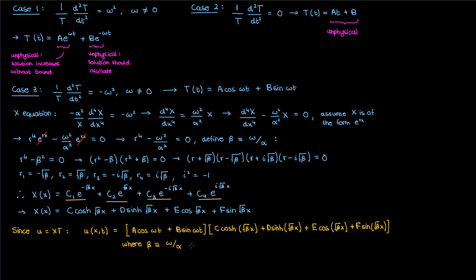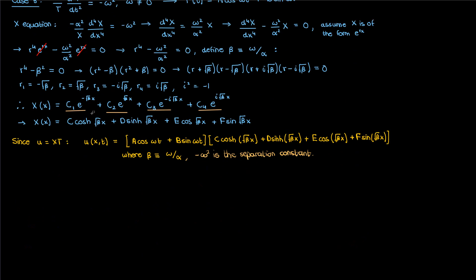Welcome back to my video series on partial differential equations. In this lesson we're going to continue solving our fourth order PDE for the vibrating beam. We've resumed directly from where we left off in the last lesson, so I encourage you to refer to that video if you need to refresh your memory. Recall that we had left off with u given by this expression, where the constant beta is given by the ratio of omega to alpha, and omega is related to the separation constant from solving the vibrating beam problem via separation of variables. I'll call this equation 1.